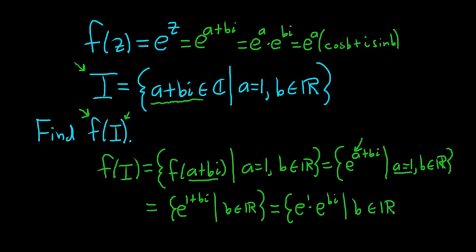Beautiful stuff. So this is furthermore equal to the set of all elements of the form e times—and now we can use Euler's as we did above at the beginning—cosine b plus i sine b. So every element, and here b is a real number. So every element in f of I has this form: it's e times cosine b plus i sine b.